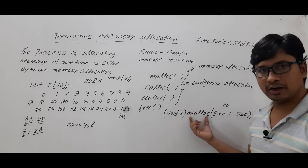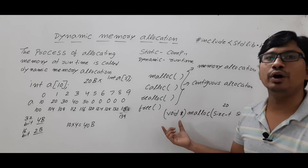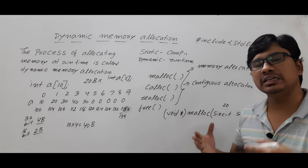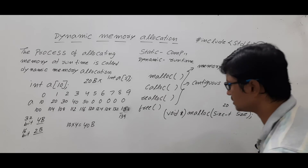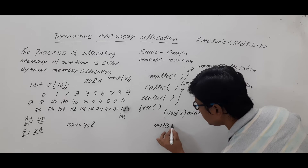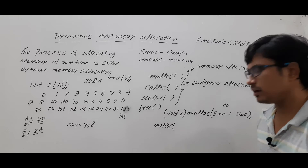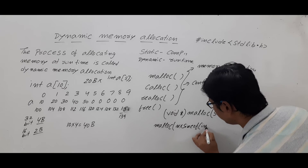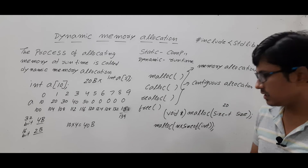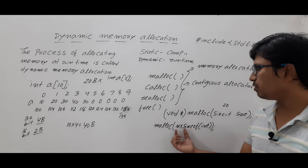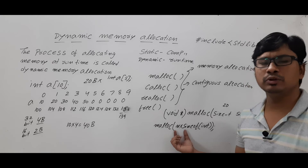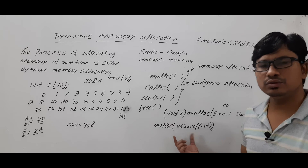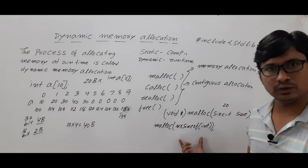Malloc by default returns a void pointer. If you want to store n integer variables, you write malloc(n * sizeof(int)). If running on a 32-bit compiler, sizeof(int) gives 4 bytes, so 4 × n bytes are allocated. During runtime you ask the user to enter n — if n is 10, 40 bytes are allocated; if n is 5, 20 bytes are allocated.